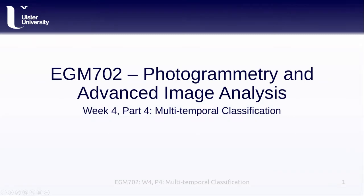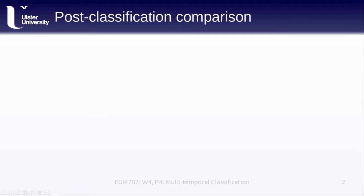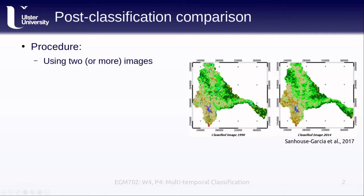Hello and welcome to EGM 702, week 4, part 4: multi-temporal classification. Before I jump into multi-temporal classification, I'm going to say a little bit about post-classification comparison. The way this works is that we have two or more images — an image from 1990 and an image from 2014 — and then we classify each one.